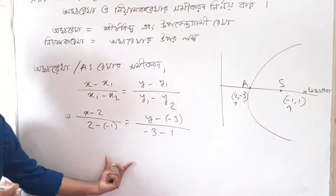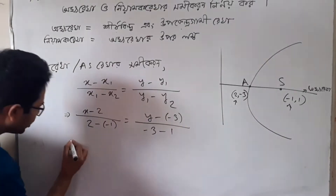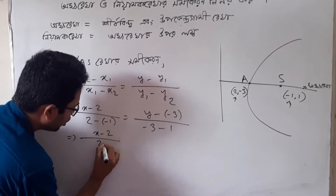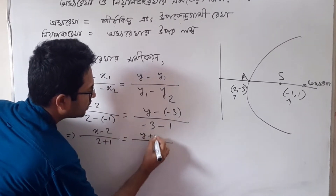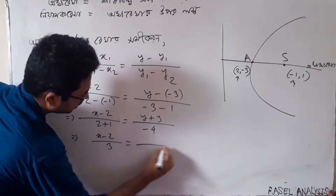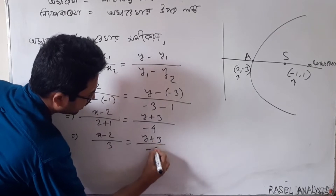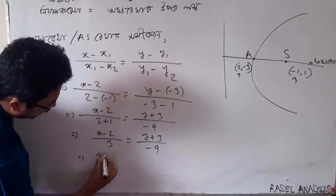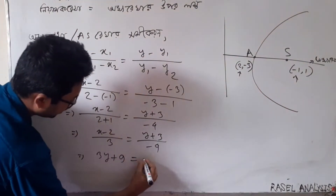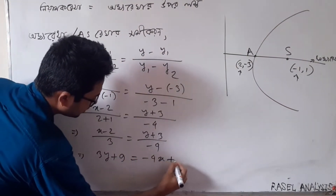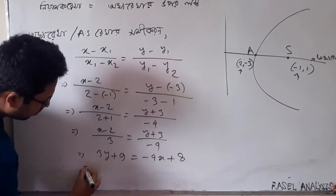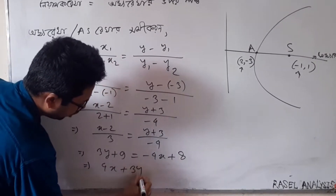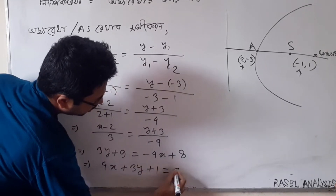So, we have to do this. So, x minus 2, then 1 minus 1, y plus 3 minus 4. y plus 3 plus minus of y plus minus. So, 4x plus 8. That is the answer, so 4x plus 3y plus 1 equal 0.